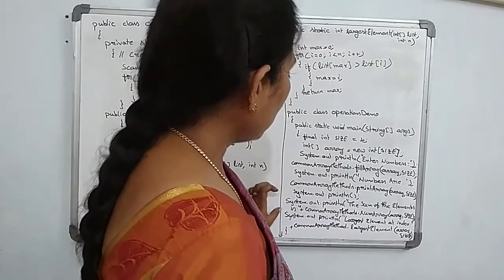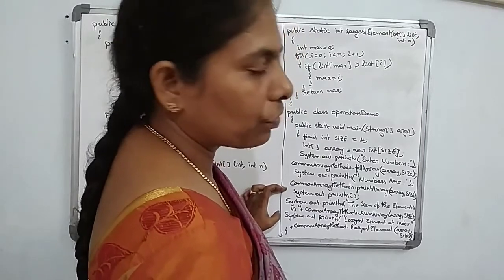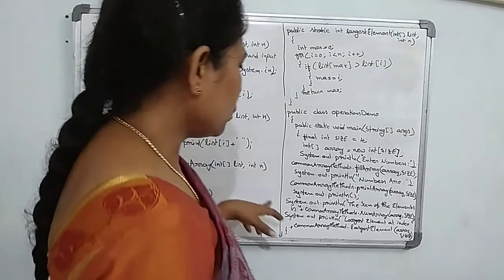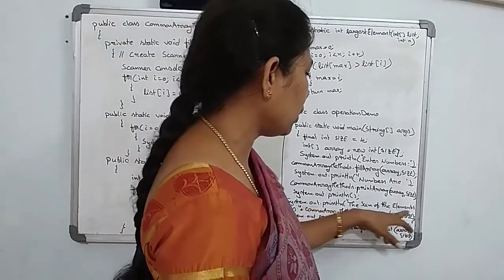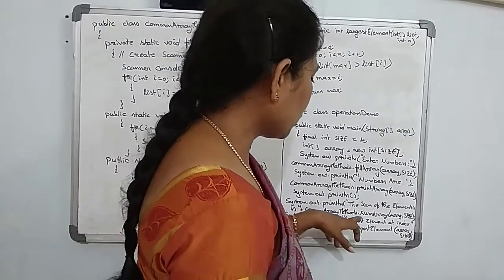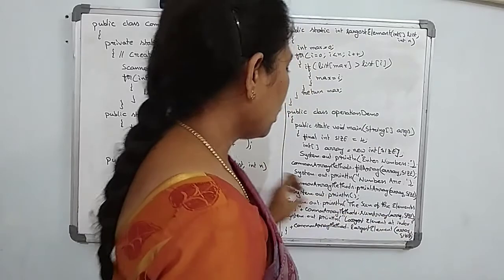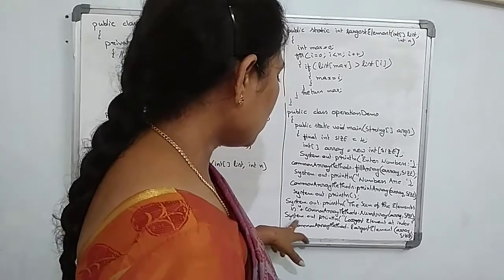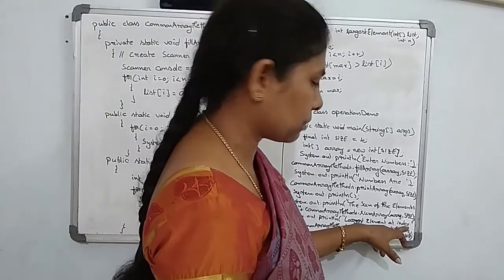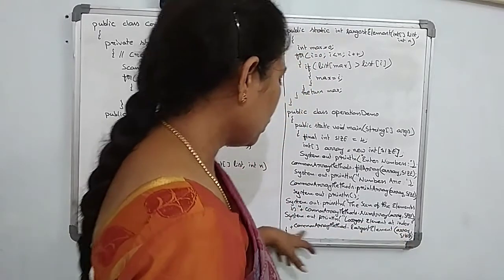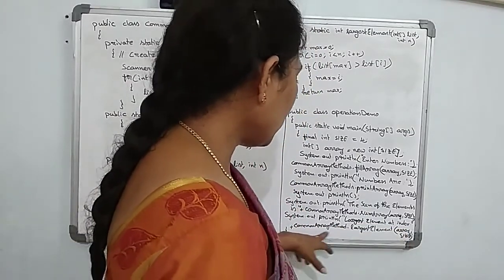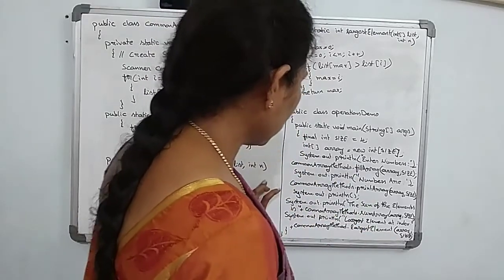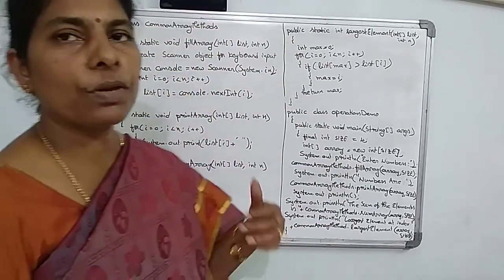After printing, we find the sum of the elements by calling CommonArrayMethods.sumArray(array, size), printing the sum. Next, to find the largest element, we call CommonArrayMethods.largestElement(array, size), which prints the index containing the largest element. These are the four method calls in the main method — the complete example of operations on arrays.